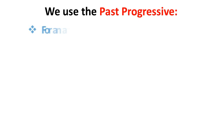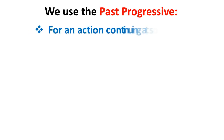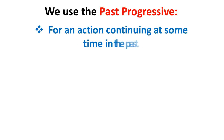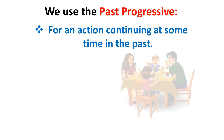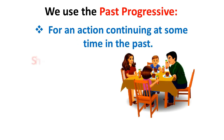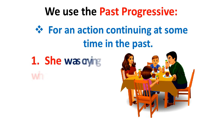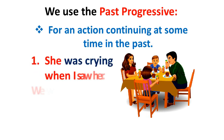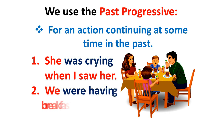We use the Past Progressive for an action continuing at some time in the past. For example: she was crying when I saw her; we were having breakfast when he came.